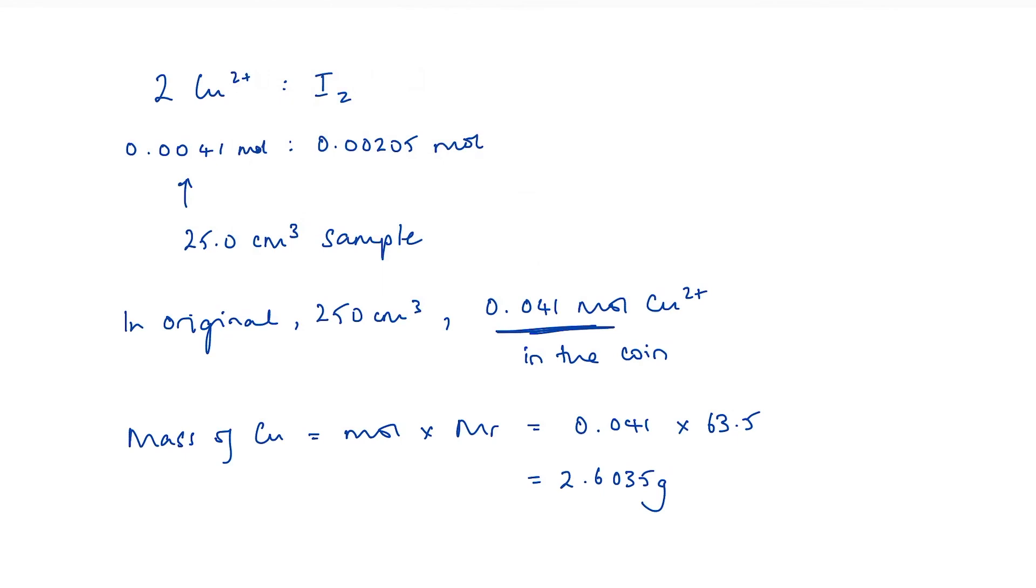So to finish off, the percentage of copper in the coin is just going to equal the mass of copper divided by the mass of the coin, which they told us in the original question is 3.47 times 100. And that comes to 75.0%.